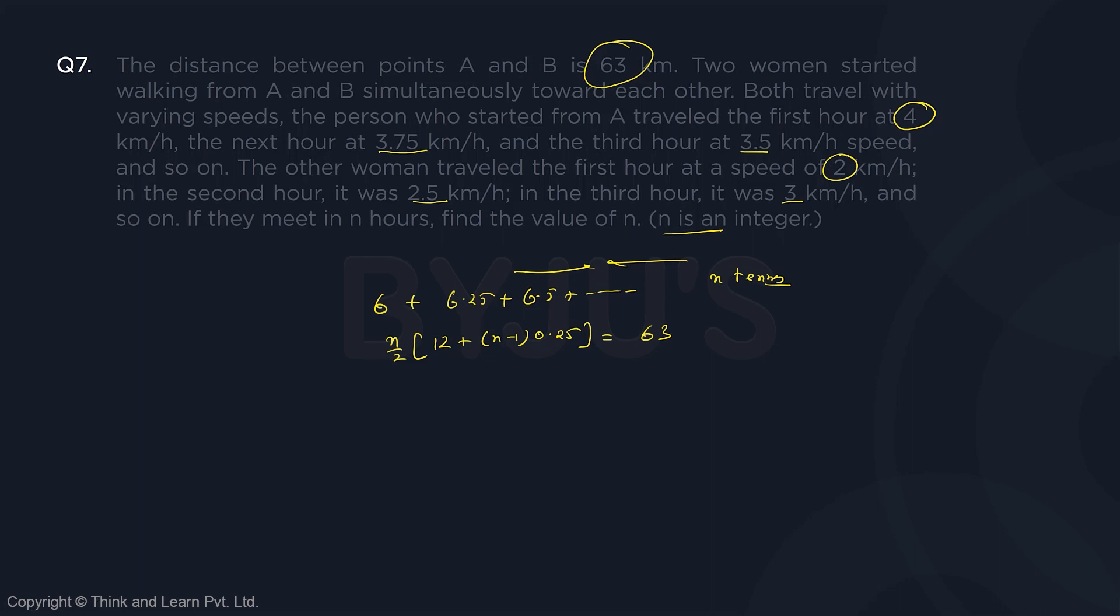Multiply by 2 gives you 12n plus n by 4 minus 1 by 4 is equal to 126, or n into n upon 4 gives you 48 minus 1, 47 plus n is equal to 126.